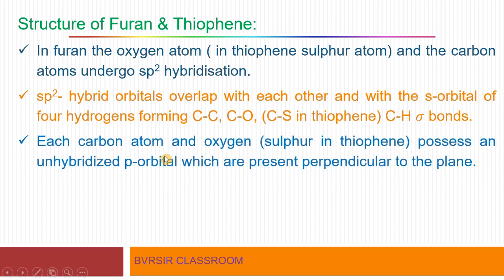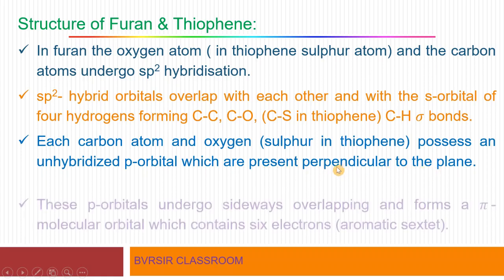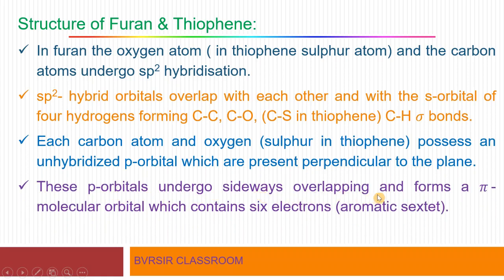Each carbon atom, and oxygen in furan or sulfur in thiophene, possesses an unhybridized P orbital which is present perpendicular to the plane. Just as in pyrrole, these unhybridized P orbitals are present. The carbon atoms as well as the oxygen (in furan) or sulfur (in thiophene) have unhybridized P orbitals. These P orbitals undergo sideways overlapping and form pi molecular orbitals which contain six electrons — the same six electrons as before — and this aromatic sextet forms.